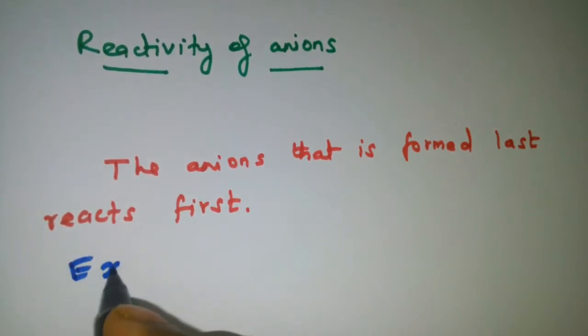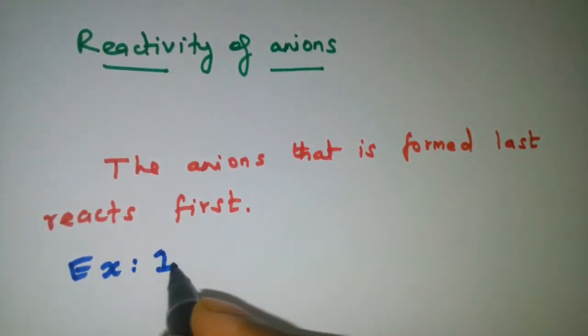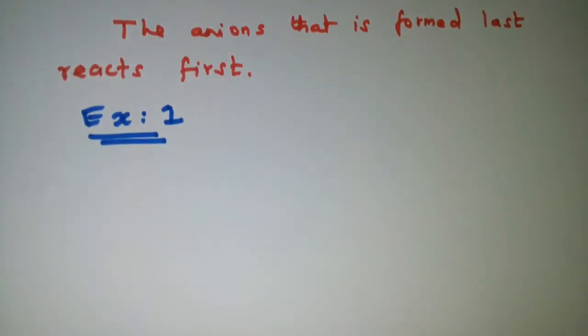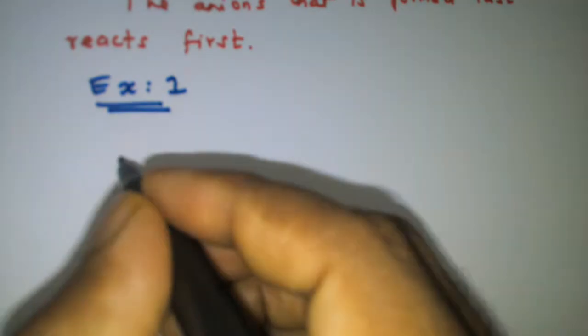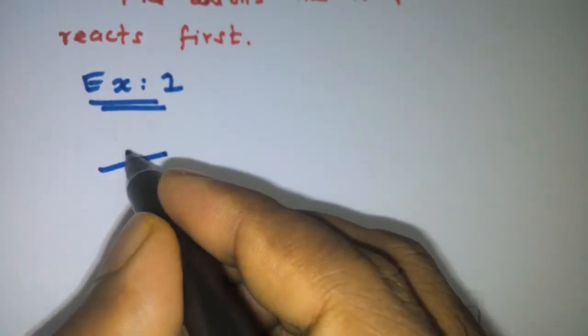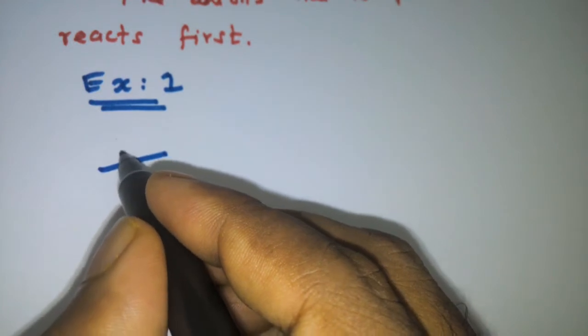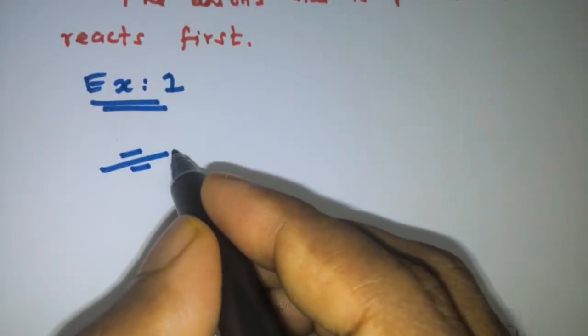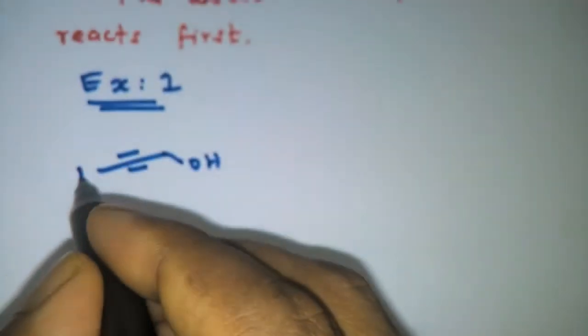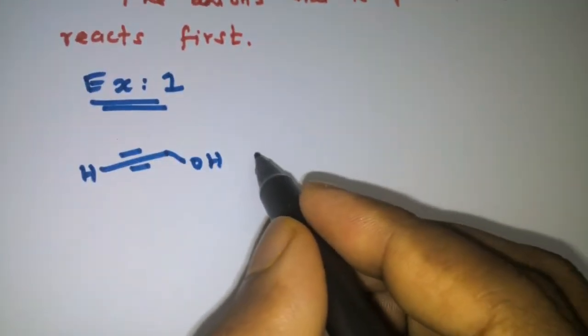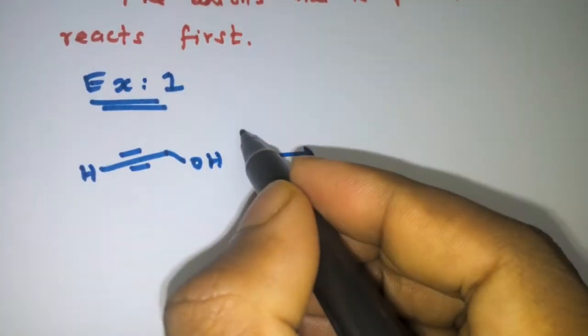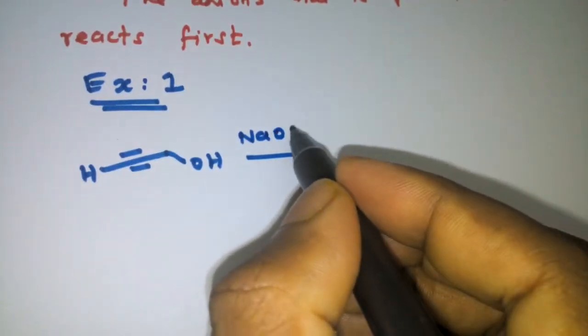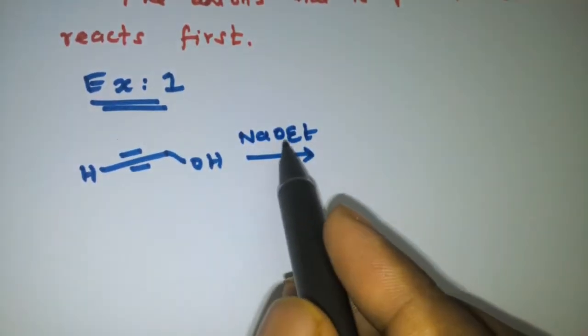Example 1. We can take an example with an alkyne that has an O-H group and a terminal H. This molecule reacts with a base like sodium ethoxide. What will happen?